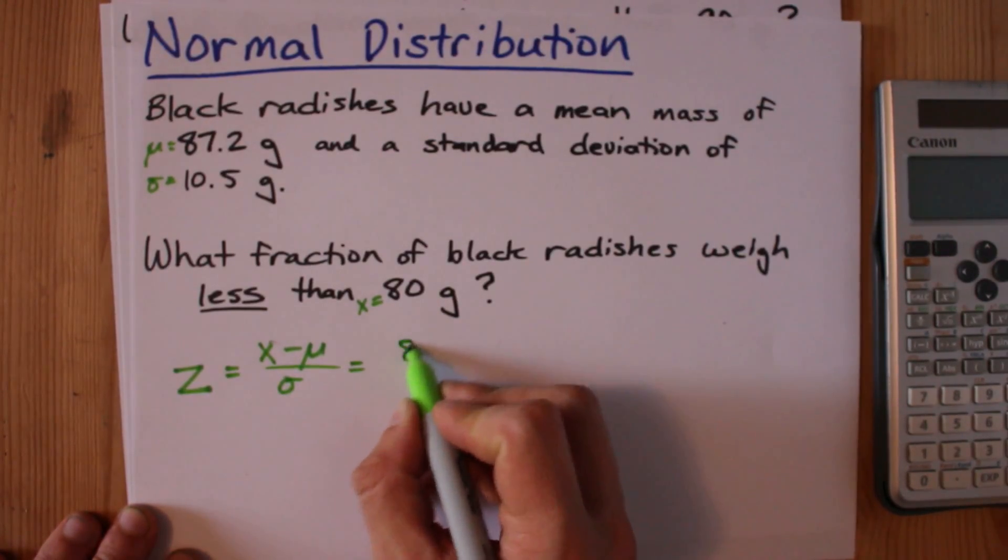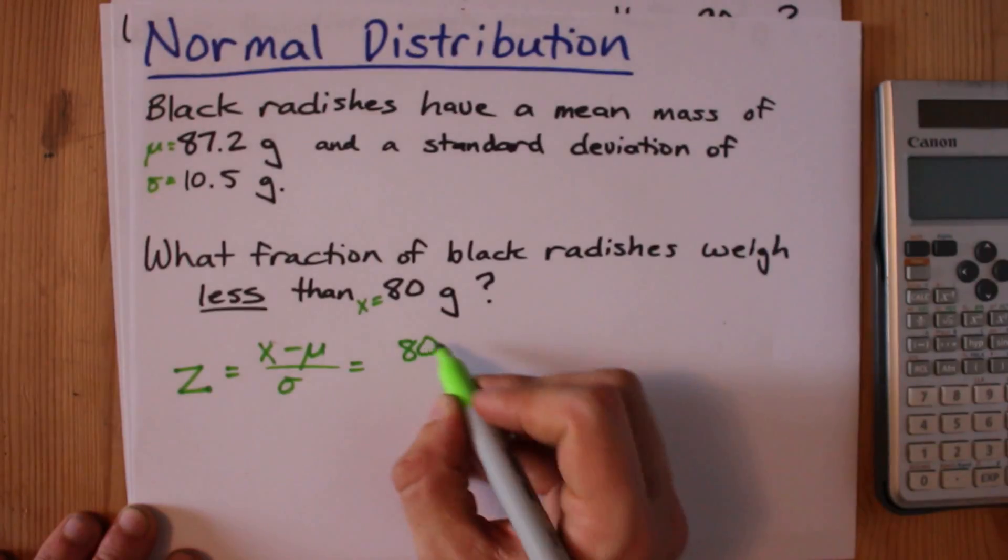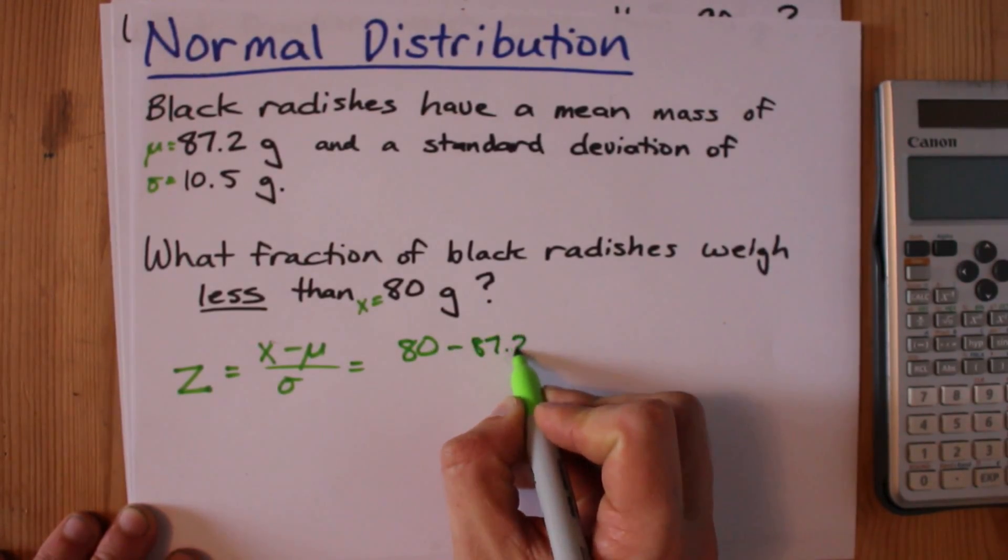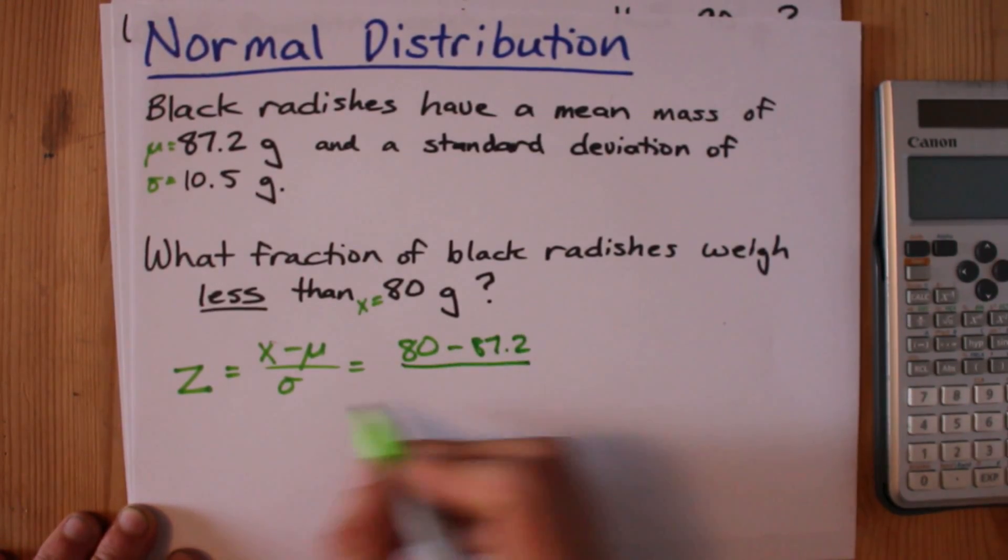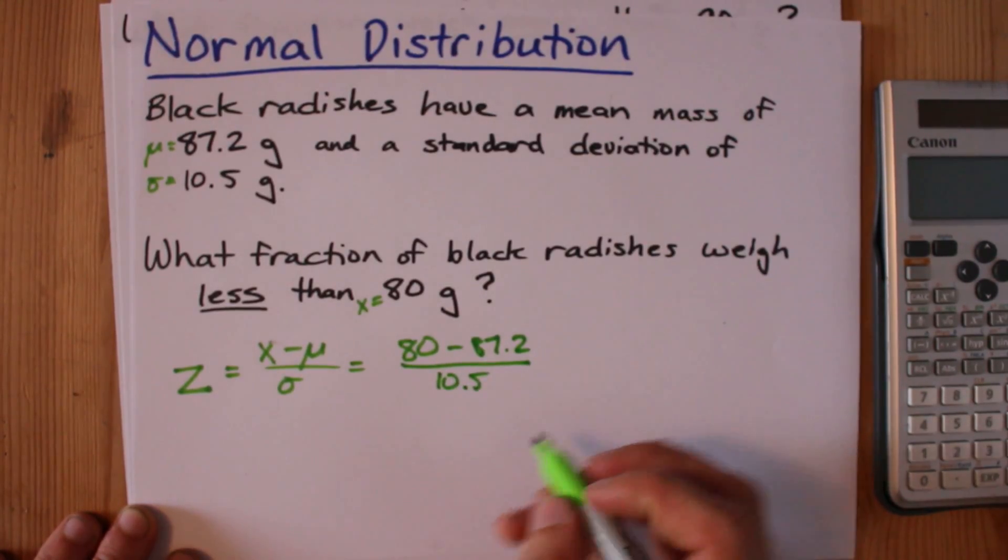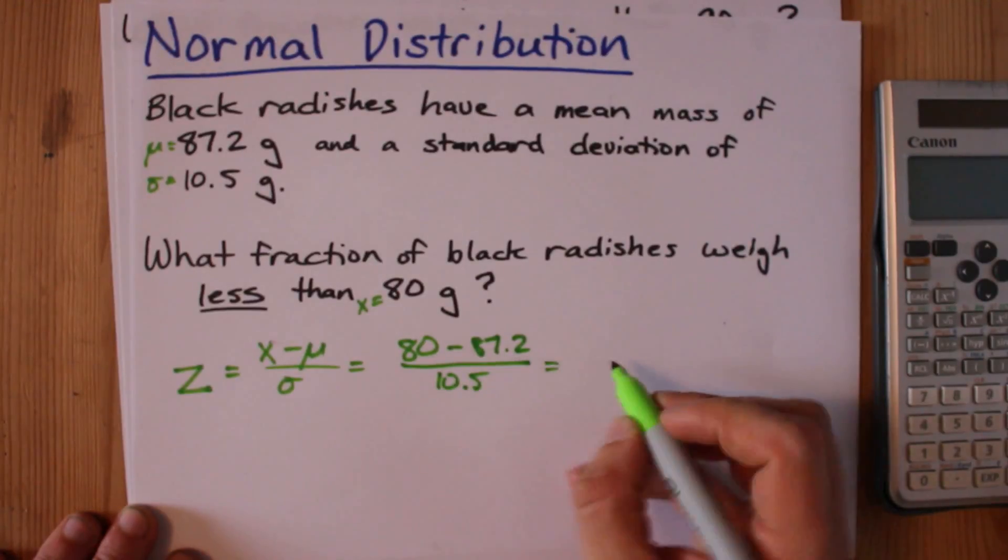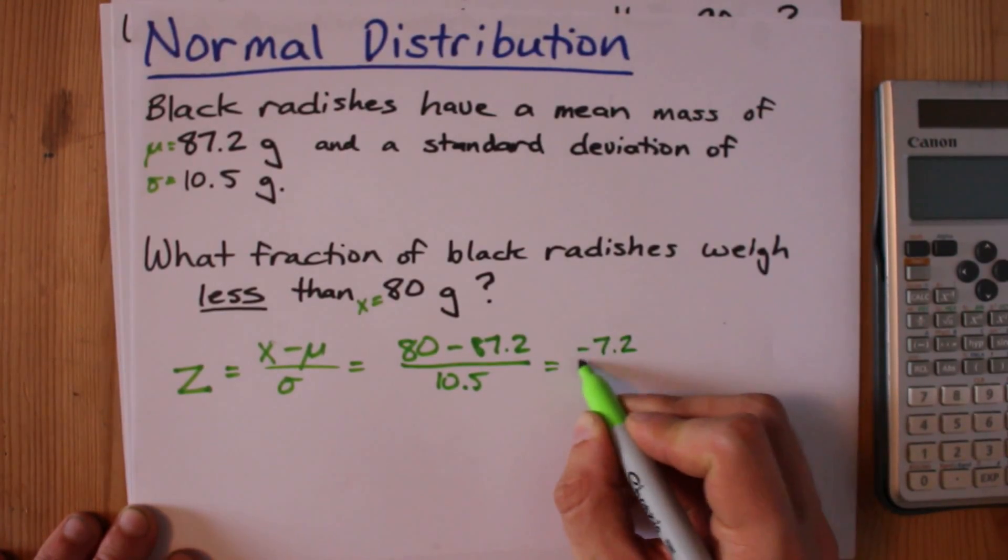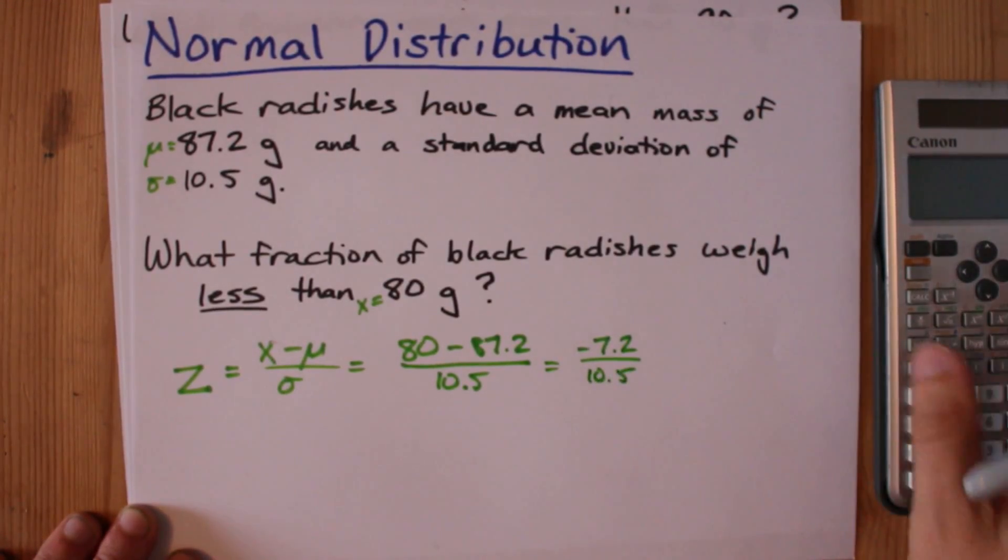x is 80 grams, mu, the mean, is 87.2 grams, and sigma, the standard deviation, is 10.5. When you subtract 87.2 from 80, you get negative 7.2 divided by 10.5.